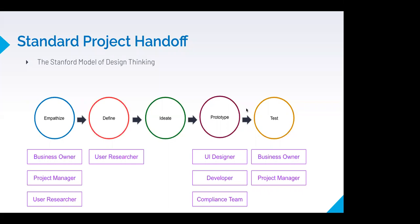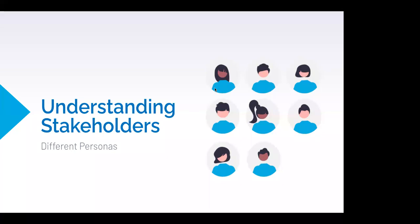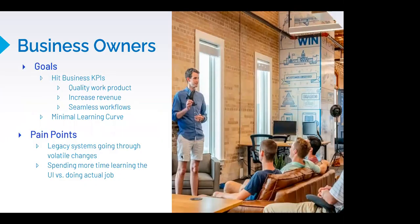Now my favorite part: understanding your stakeholders, each with their own goals and pain points. Business owners are often your end users, though this varies by project. You want to make them happy because they're the ones you're designing for. Business owners are primarily concerned with KPIs that directly correlate to business objectives — ensuring quality work products, maximizing revenue, and seamless workflows that increase productivity. As a UX designer, one challenge is finding a direct correlation between user satisfaction and company capability. Also keep in mind that business owners who've been with the company for years may be resistant to relearning a completely new UI.